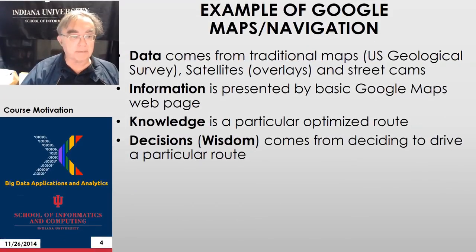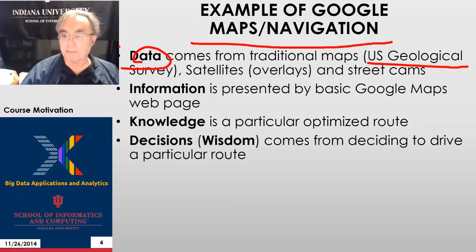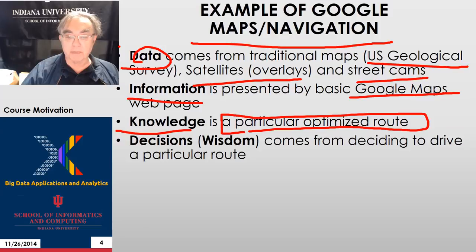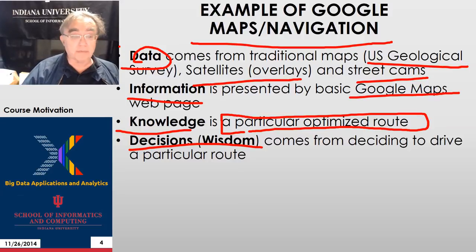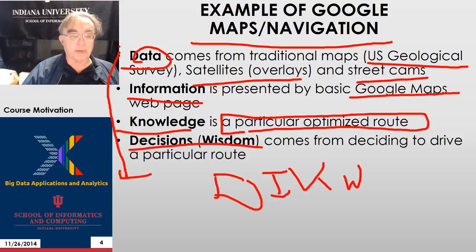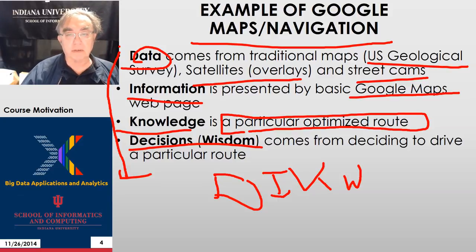Here is the final slide in this very general discussion of the pipeline. We take Google Maps and navigation as the example. The data is the original maps — USGS, satellites for the overlays, and street cams. The information is the integration of that data cleaned up on a basic Google Maps web page. Knowledge is when Google Maps displays a particular route from place A to place B, sometimes with multiple choices. And then the decision or wisdom comes when you actually decide which route to drive and you drive that route, hopefully getting where you want to go. This is a simple example of the DIKW pipeline, which is pretty universal. Although I stress that the actual dividing line between data and information, information and knowledge, knowledge and wisdom, and wisdom and decisions is extremely artificial and wishy-washy, so you shouldn't read too much into that.